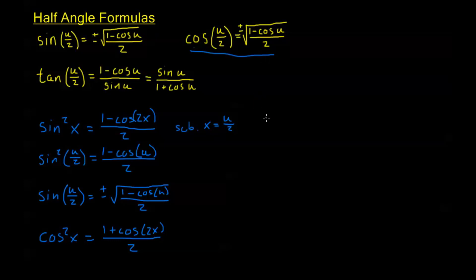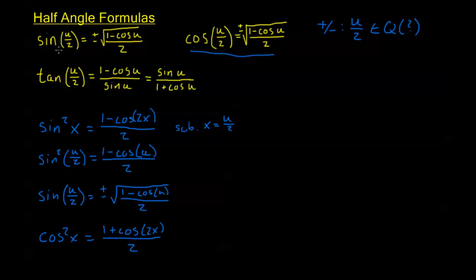It's very important for these first two formulas that we keep in mind where this plus or minus is coming from. When we think plus or minus for half angle, what we should be thinking is: which quadrant is u over 2 in? We're really looking at the left hand side and determining whether sine of u over 2 is positive or negative. Whatever the answer to that question is, that's going to be our plus or minus sign on the right hand side.